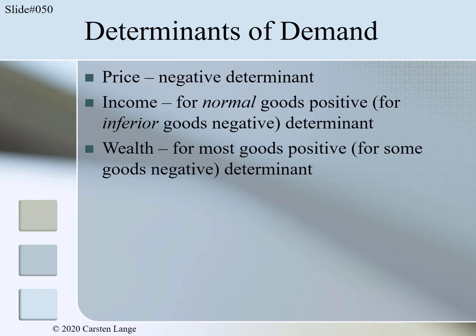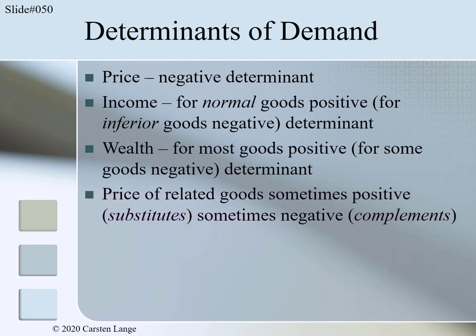A very important effect is the price of related goods. This effect is sometimes positive and sometimes negative. For example, if we analyze the good Pepsi-Cola, a price increase of the related good Coca-Cola would increase the demand for Pepsi, because some customers would shift their demand from Coke to Pepsi. Therefore the effect would be positive — a price increase of Coke leads to a demand increase of Pepsi.